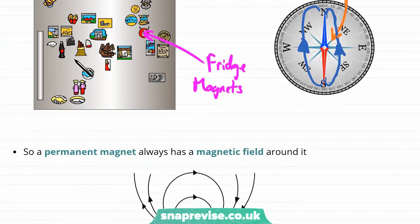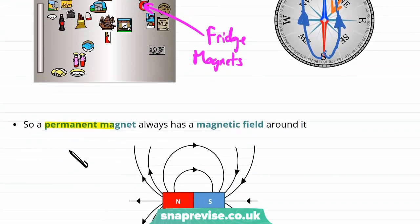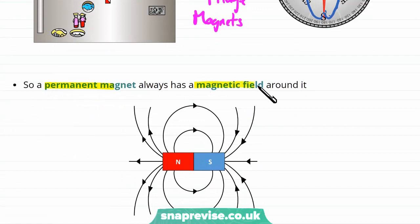So we now know that a permanent magnet is something which always has a magnetic field around it. For example, a normal bar magnet always has this magnetic field around it.